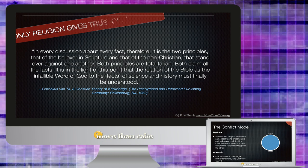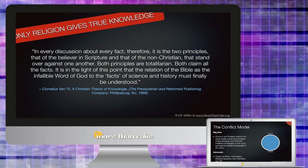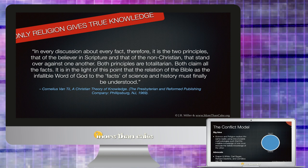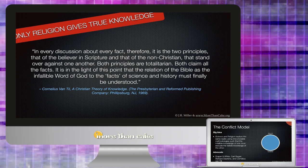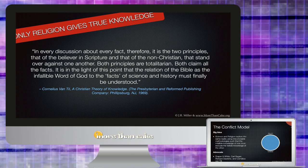On the religious side, let's look at Cornelius Van Till and his book A Christian Theory of Knowledge. He says this quote: 'In every discussion about every fact, therefore, it is the two principles—that of the believer in scripture and that of the non-Christian—that stand over against one another. Both principles are totalitarian, both claim all the facts. It is in the light of this point that the relation of the Bible as the infallible word of God to the facts of science and history must finally be understood.' So for Van Till he offers the exact opposite explanation of Sir Richard Gregory. For Van Till, only religion gives true knowledge.